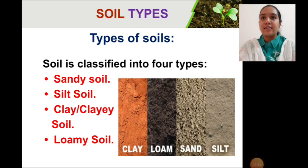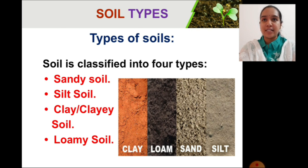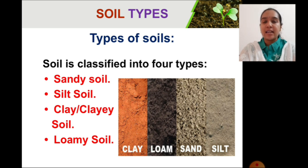Soil is mainly classified into four different types: sandy soil, silt soil, clay or clayey soil, and loamy soil. The picture you see shows how they actually appear in nature.